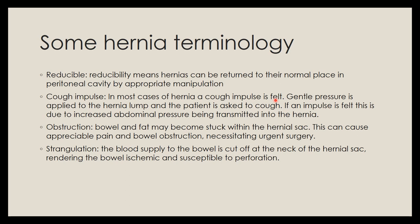A cough impulse is felt when you apply gentle pressure over the hernia site and ask the patient to cough. Coughing increases abdominal pressure, which is transmitted to the hernia, producing a palpable impulse. Some hernias may get obstructed — bowel or fat stuck inside the sac, causing pain and possible bowel obstruction requiring urgent surgery. In strangulation, blood supply to the bowel is cut off at the neck, leading to ischemia, bowel death, and possible perforation.